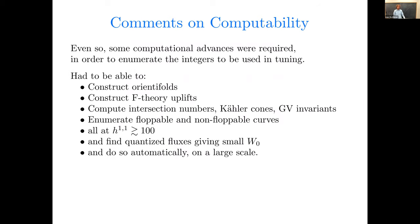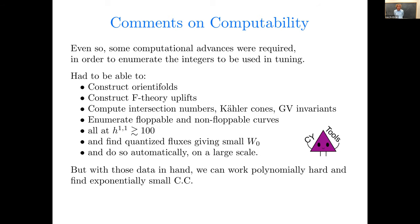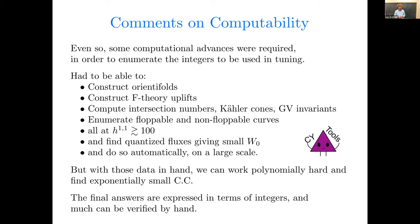Now, I should say some computational advances were required in order to actually enumerate the integers to be used in the tuning. So the effective theory that I wrote down here, you could have made it up as an EFT. Probably at some level, people did make it up as an EFT in, let's say, 1985 or something like that, as in the old studies of racetracks. But the question is, do the relevant integers actually arise in a quantum gravity construction? So that's where one had to do a little more work. So the computational advances we needed, well, we had to be able to construct the orientifolds, their uplift, compute intersection numbers, GV invariants, etc., etc., enumerate the curves that can be flopped and that can't be flopped, find quantized fluxes giving small w naught, and have to do all this at large H11 and automatically on a large scale. And although we've been working on computational efforts in this direction for a while, two years ago, the only one of these things we could do at large H11 is compute intersection numbers. All the rest was inaccessible. But we made some progress, and now we can do all these things at large H11 automatically on a large scale, and that's how we were able to find these vacua with CY tools. So with that capability in hand and with those data, we can then work polynomially hard in picking integers and find exponentially small CCs. And the final answers are expressed in terms of those integers, fundamentally quantized parameters, and a lot can be verified by hand.